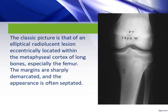This is the classic picture of a fibrous cortical defect. You can see an eccentric radiolucent lesion located within the metaphyseal cortex of the upper end of the tibia. The margins are sharply demarcated and the appearance is often septated.